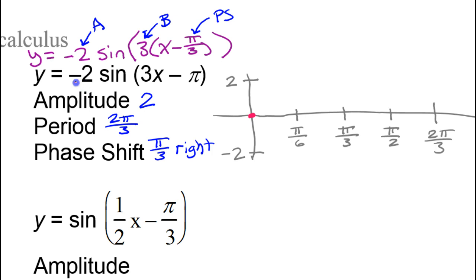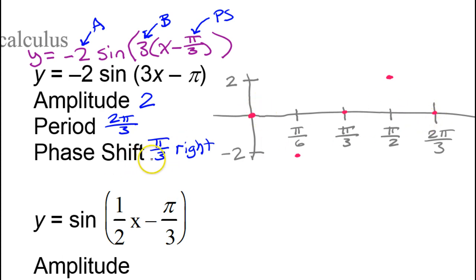Be careful — this negative in the front is a reflection over the x-axis. So whereas usually the sine function goes up first, because it's a reflection over the x-axis it'll be upside down, so it's actually going to go down first, then back up to the midline, then up to its highest value, then back to the midline. This is what the graph would look like if there was no phase shift.